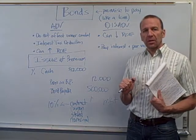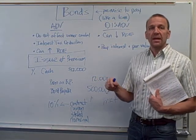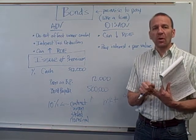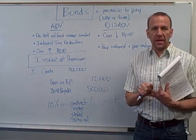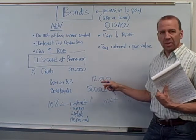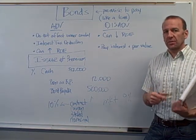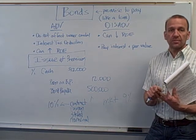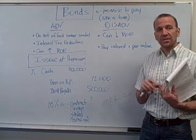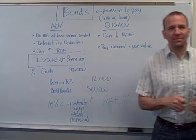In future videos we'll cover how to handle the premium and the discount. There are two methods: the straight-line method and the effective interest method. Every six months when we record interest expense, we'll also be eliminating part of the premium or part of the discount, depending on which method is used. That's a lot of good information — you may want to watch this video a couple of times because it is detailed, but it does make sense.